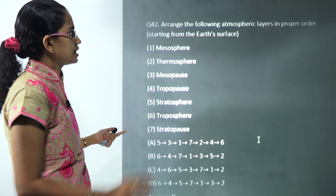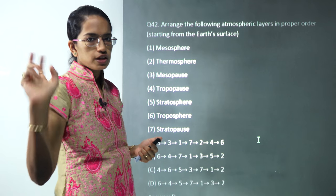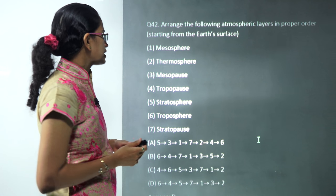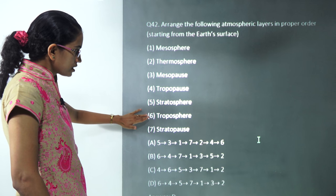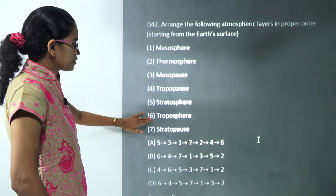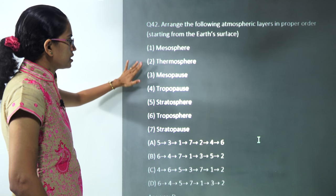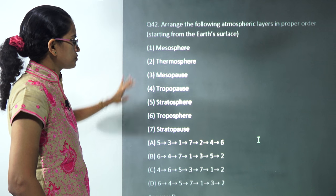Next is layers of atmosphere. We talked about this in our recent class on layers of atmosphere, a short video you can refer. The lowest layer is troposphere, followed by pause. After every layer you have a pause: troposphere, tropopause, stratosphere, stratopause, then mesosphere, mesopause, then thermosphere. Those are the correct order, so D is the correct choice.